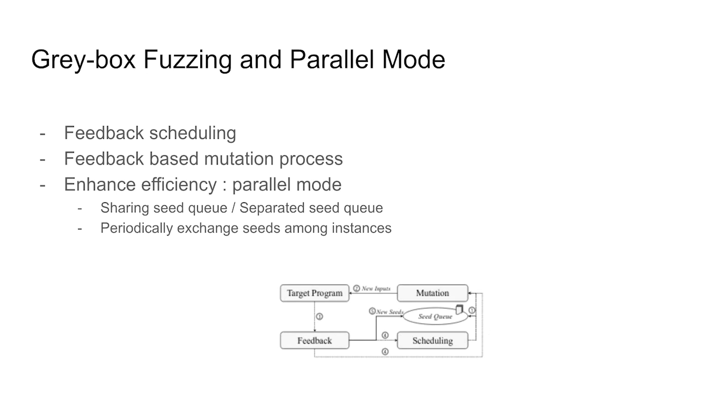Also, the fuzzer decides based on feedback whether an input under test should be added to the seed queue or not. To improve the efficiency of code coverage, many grey-box fuzzing tools provide parallel mode to run multiple instances concurrently. Depending on the implementation, different instances may either share the same seed queue or carry separate seed queues but periodically exchange the seeds. In the later case, each instance borrows from other instances all the seeds that bring new code coverage.